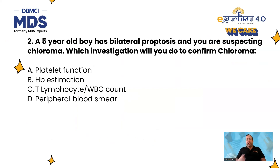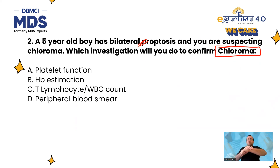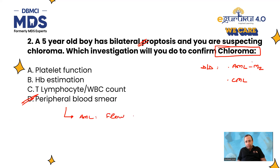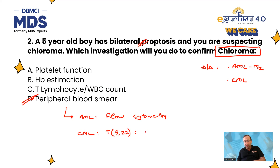Next question: a five-year-old boy has bilateral proptosis and you are suspecting a chloroma. What will you do to confirm? Chloroma is the presence of an extramedullary hematological malignancy — blood cancer outside the bone marrow. Two main blood cancers associated with chloromas are AML M2 and CML. The next investigation is a peripheral blood smear. If it is AML, we go for flow cytometry; if CML, we look for translocation 9;22, the Philadelphia chromosome, confirmed by BCR-ABL mutation analysis — BCR-ABL FISH.